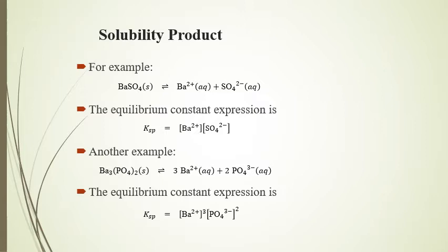One important thing to stress: depending on the type of problem, you need to look at what the source of the ion is to determine its X value. In the traditional case of dissolving a salt in water, we use the ratio of subscripts to find changes in X — like a RICE table. In this first example with a 1-to-1 ratio, it's minus X, plus X, plus X, giving Ksp equals X times X equals X².